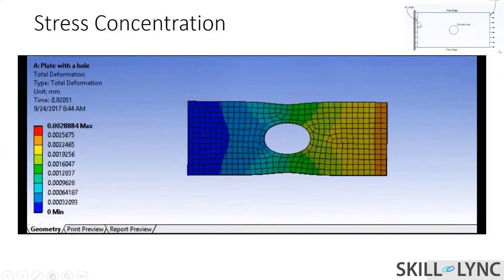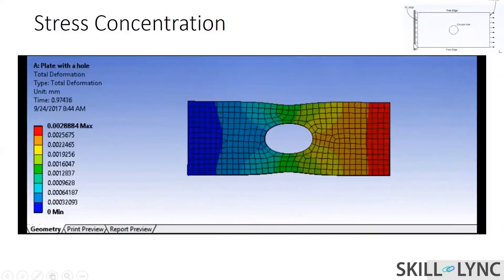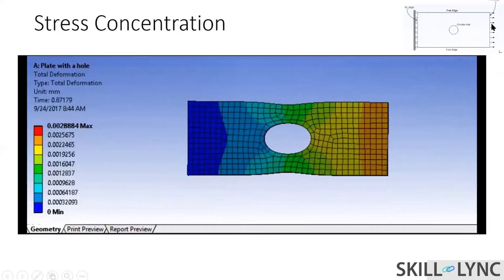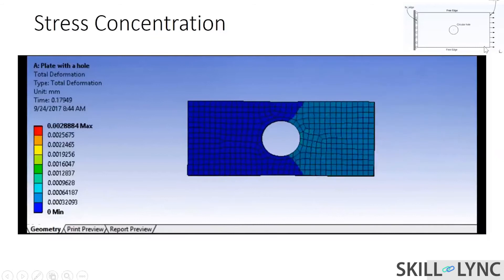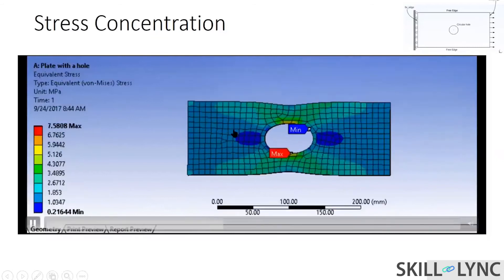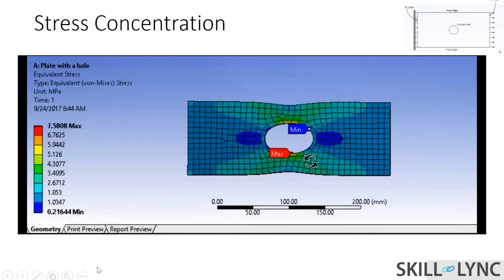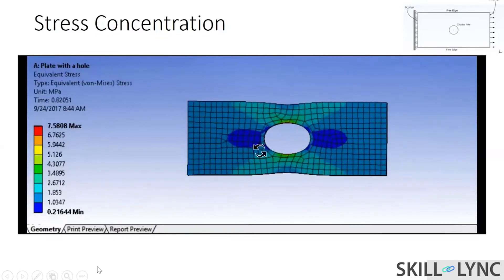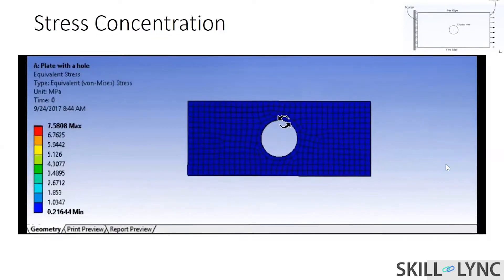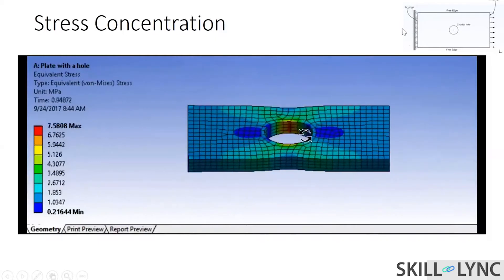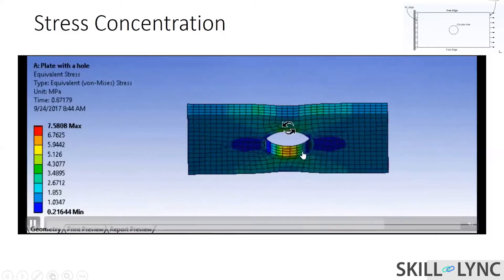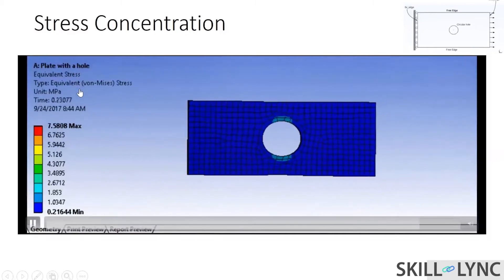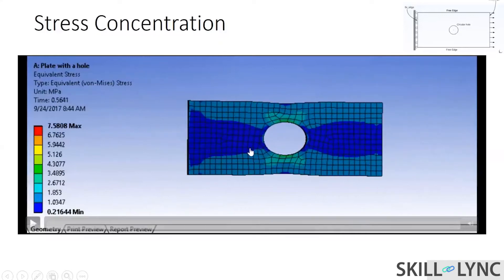On the left it's being fixed and on the right we're trying to give a load to it. For a given part, if we divide it into a number of elements — which is what we see in the small boxes — we give some loading on the right and boundary conditions on the left, which is fixing it, and we see what the stresses and deformations are.